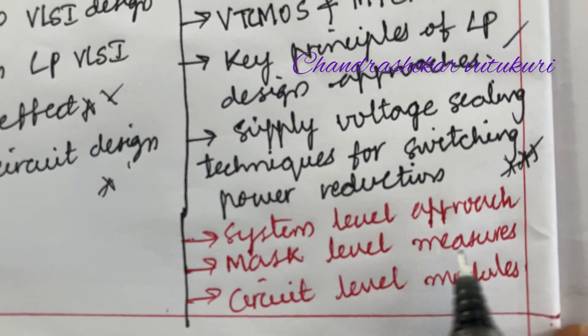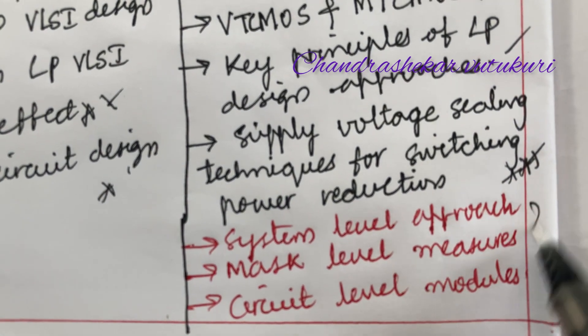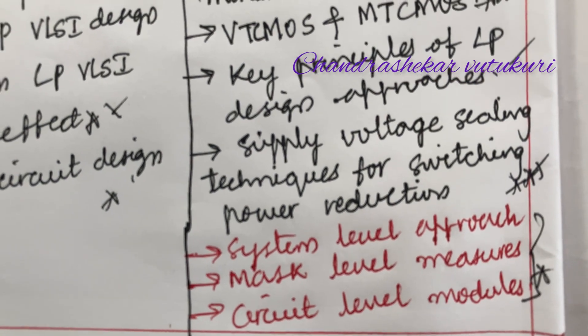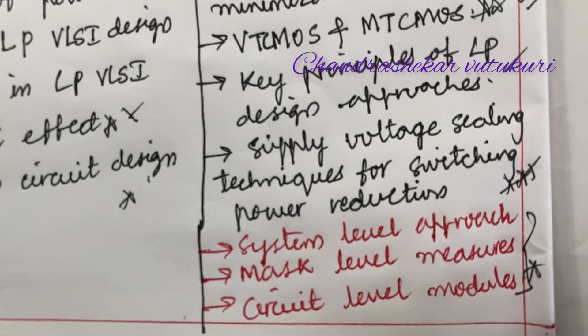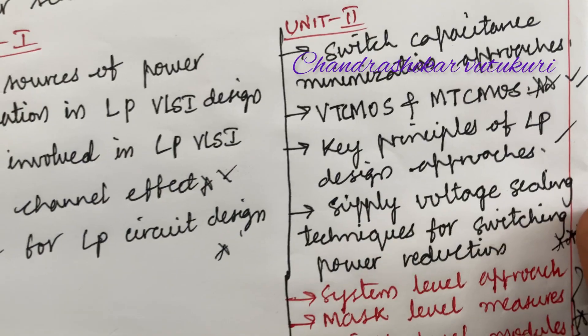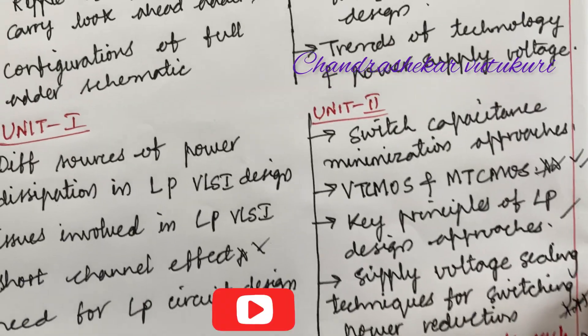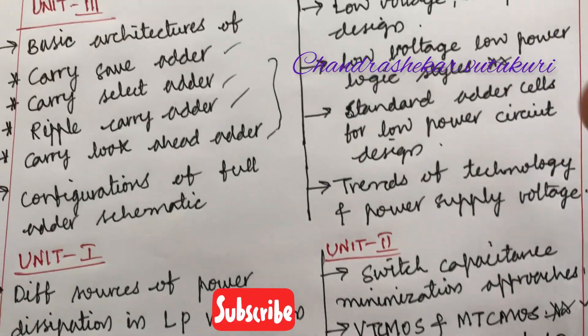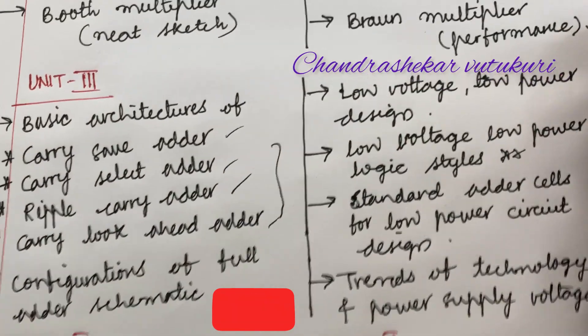The highlighted questions are system level approach, mask level measures, and circuit level modules. Out of these three, you are getting one for sure in form of long and short. There are no short questions here. You are supposed to be thorough with all the topics which I have highlighted here in form of very important and which I have kept on the paper so that you could be able to work out short as well as long.